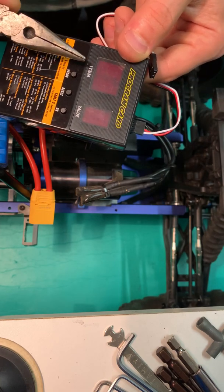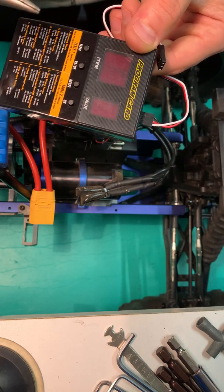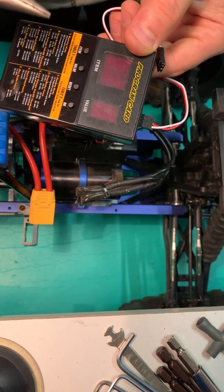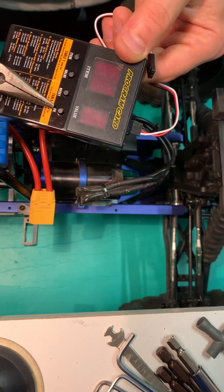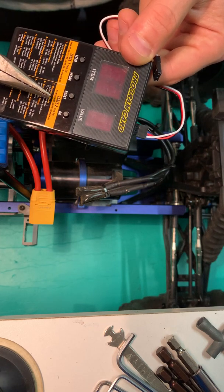After you've selected your item then you press the value button to pick the setting that you want. Press the OK button which saves all the settings.